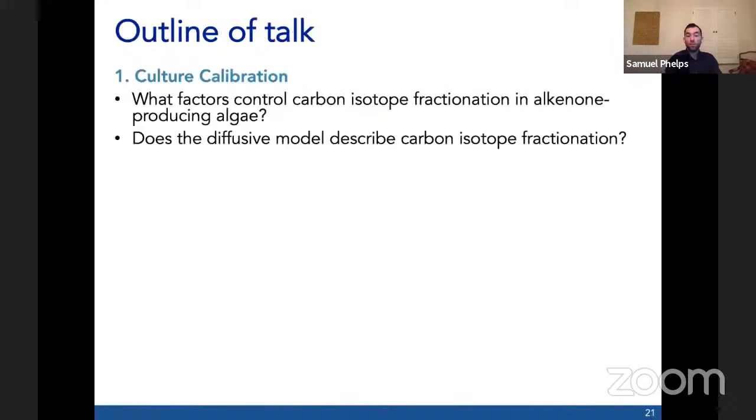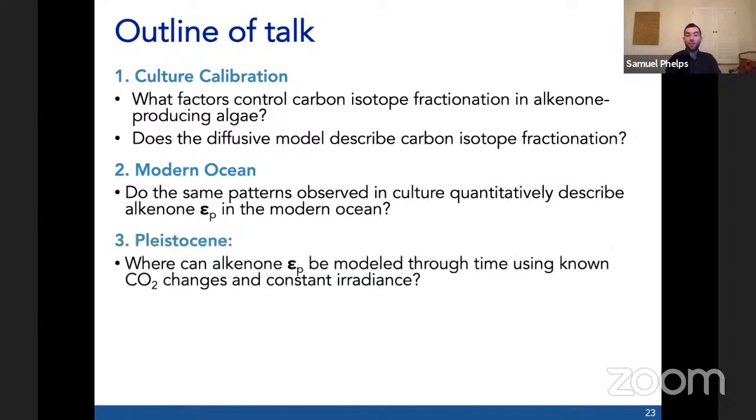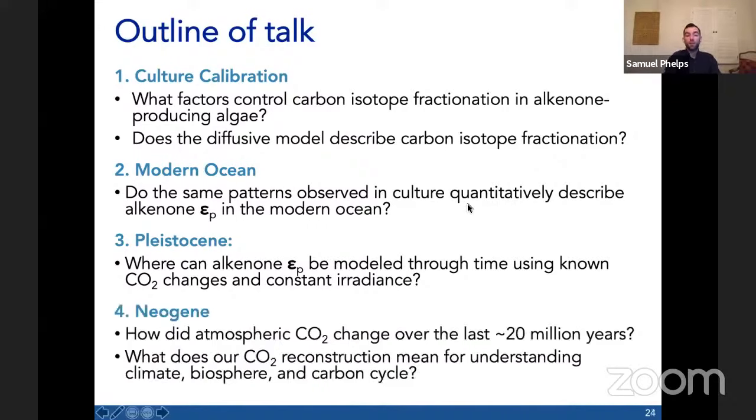To do this, I'm going to start in cultures where we can calibrate the proxy and probe some of the fundamental principles. Then we'll move into the ocean and look at core top samples to see how the calibration transfers out of the laboratory into the natural environment. Then I'll aim to validate this method by comparing EP variations in the Pleistocene to the known influence of CO2 and cell size. Finally, I will apply this method to a sediment sequence from the neogene to glean new insights about CO2 change, climate change, and the carbon cycle over the last 20 million years or so.